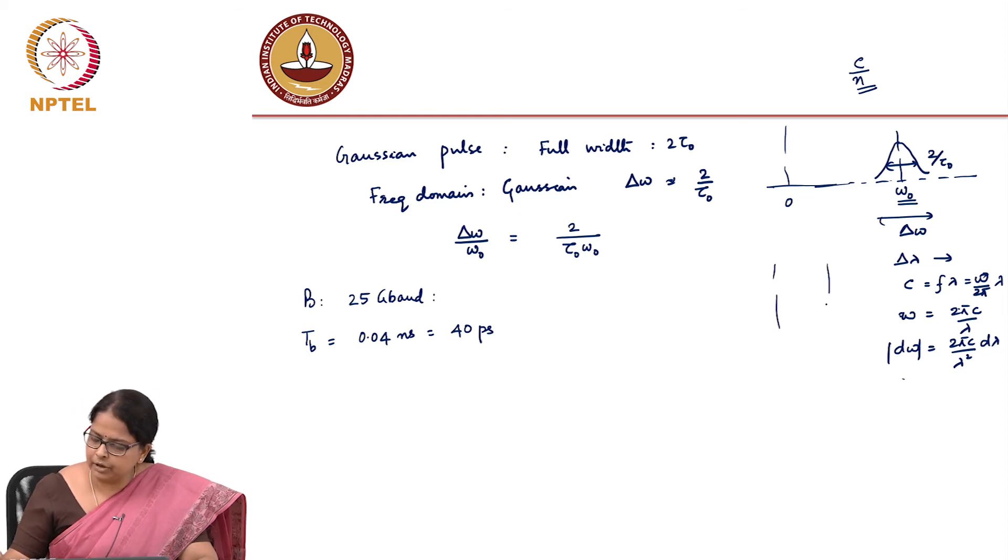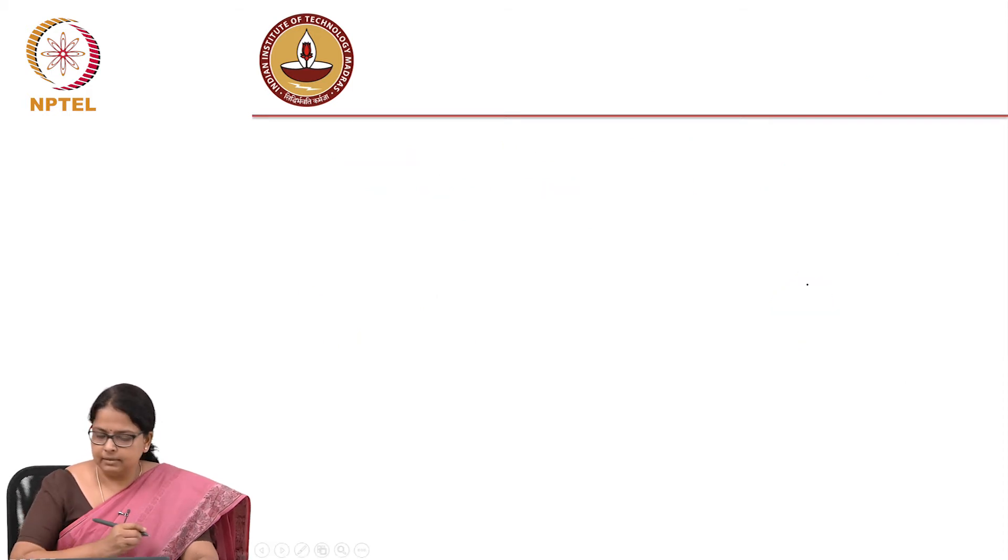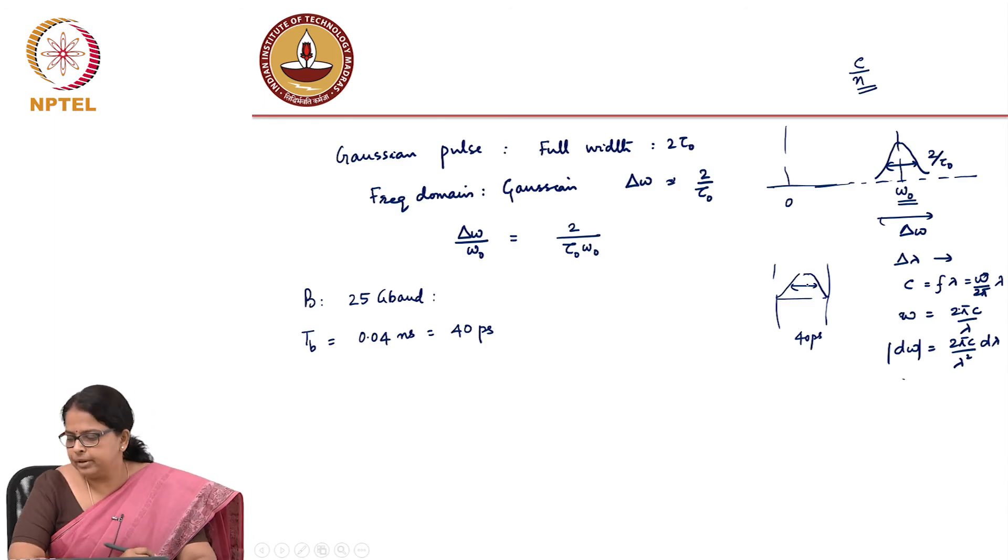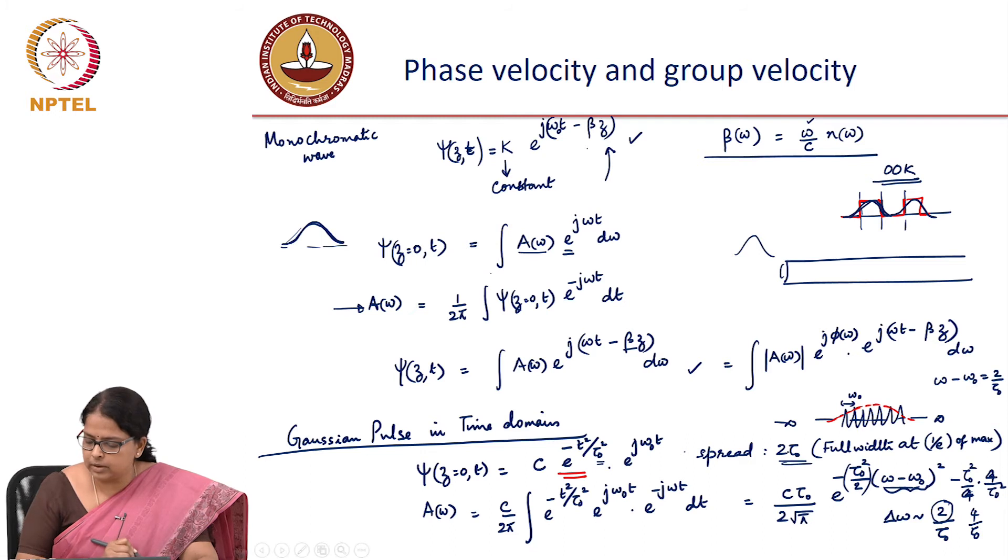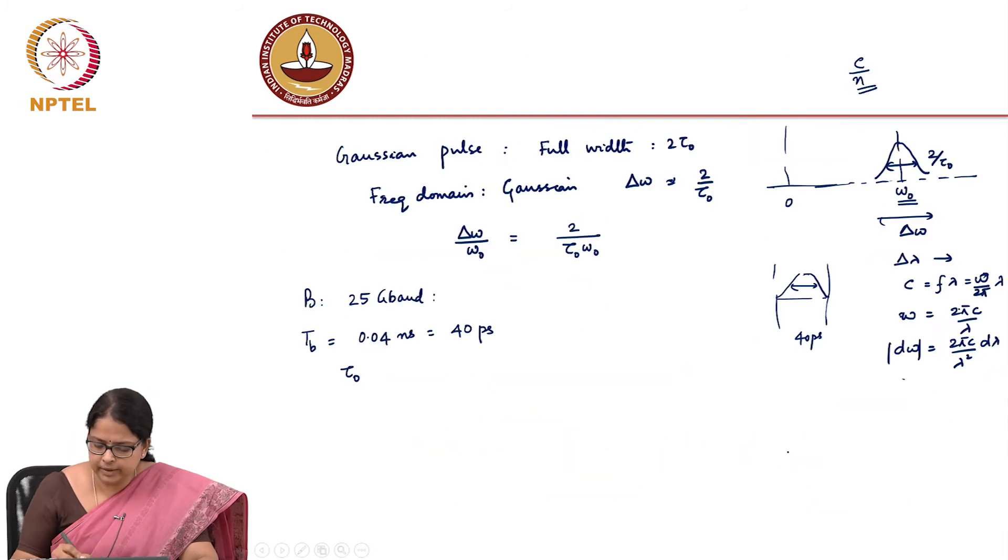So, your slot is 40 picoseconds and let us say inside that you are imagining your pulse is a Gaussian which has a width of let us say half of the bit slot. So, let us say my tau naught or 2 tau naught, 2 tau naught is my full width. So, 2 tau naught is equal to 20 picoseconds, it is covering half of my bit slot, so that my tau naught is 10 picoseconds.